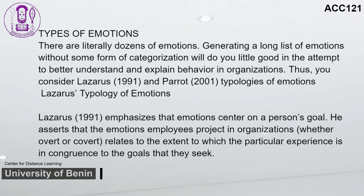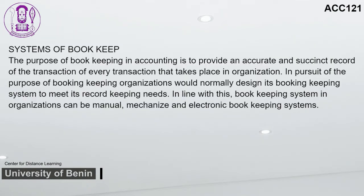Objectives of Bookkeeping: Bookkeeping leads to the production of permanent records of transactions undertaken in an organization. The financial health of a firm can be adduced from its records of assets and liabilities on a particular date. The profitability of an organization is measured from data provided by the record of transactions. Information on an organization's obligations and assets can be disclosed in these records. The bookkeeping process provides up-to-date information and helps determine the state of financial position at different intervals. Organizations design their bookkeeping system to meet their record-keeping needs, which can be manual, mechanized, or electronic.